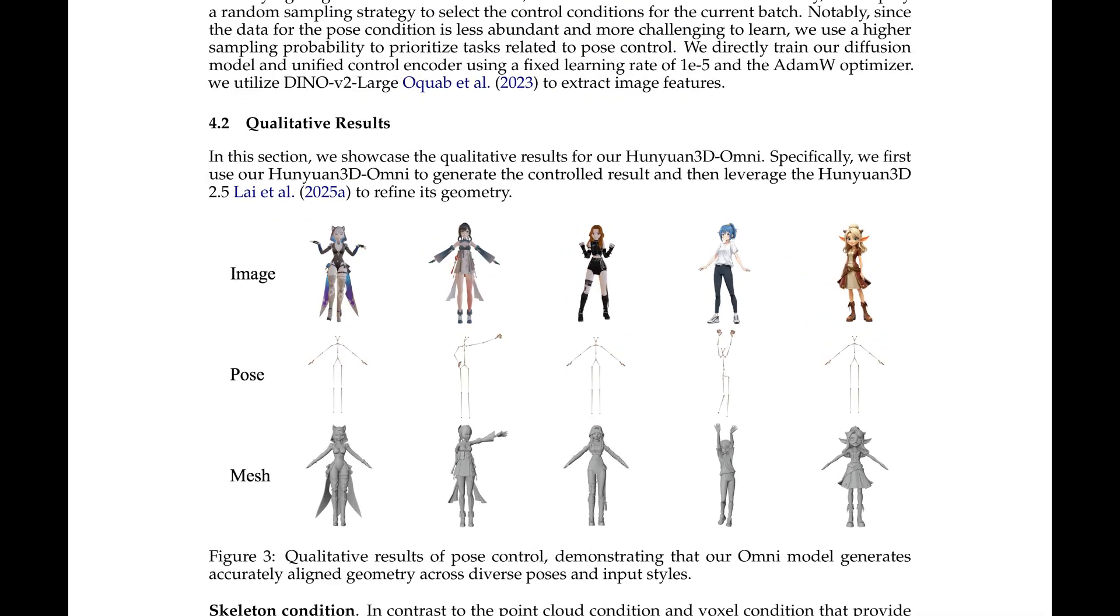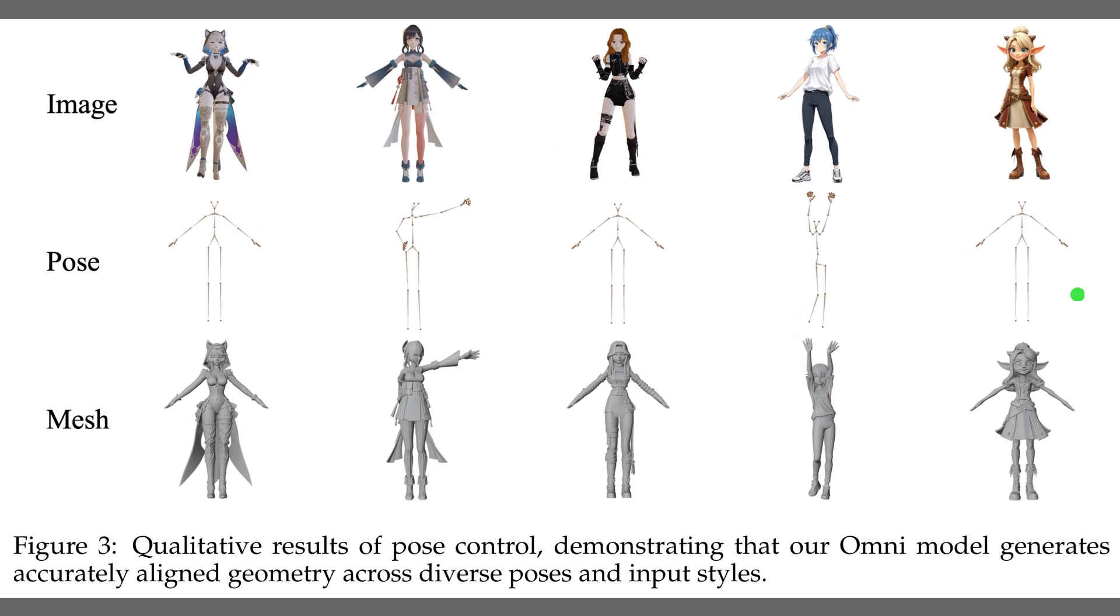Figure 3 demonstrates that pose control yields meshes that match the target skeletons across very different character styles. Skeleton control means the model receives bone positions that specify a desired body configuration, so the generator can anchor limbs and orientation precisely.